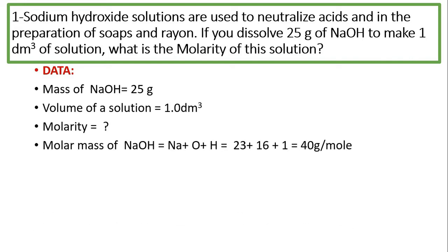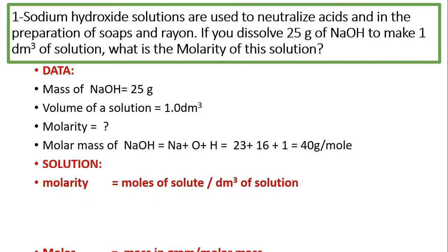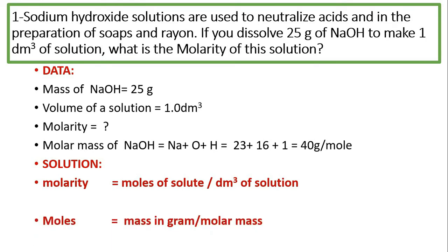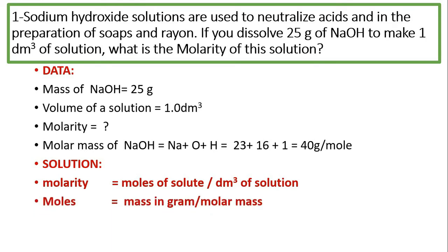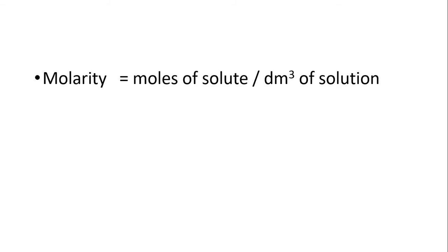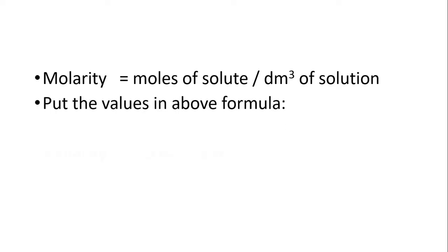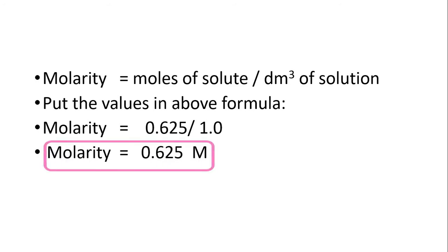The molar mass of NaOH is 40 g/mol. Solution: molarity equals moles of solute divided by dm³ of solution, but we don't have number of moles. So first we calculate: moles = 25 divided by 40 = 0.625 moles. Then molarity = 0.625 divided by 1.0, so the molarity of this solution is 0.625 M.